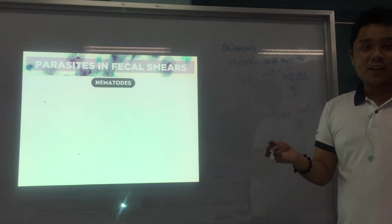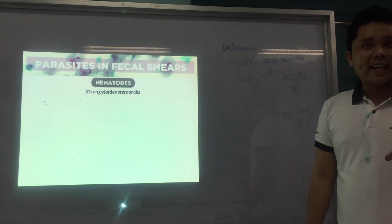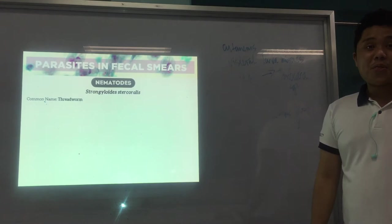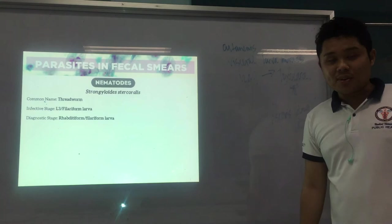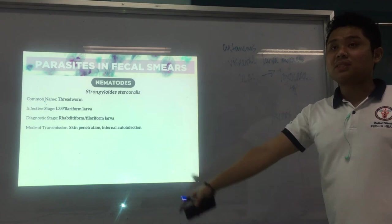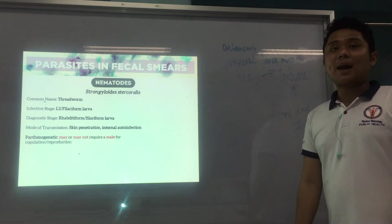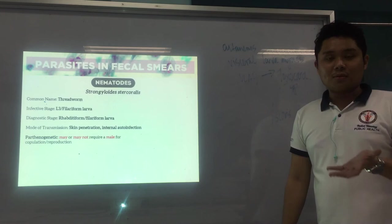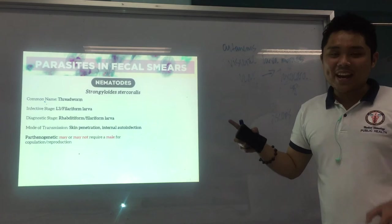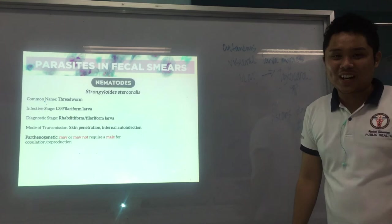The next nematode is Strongyloides stercoralis, closely related to hookworm. The common name is threadworm because it looks like a thread — very thin. The infective stage is the filariform larva, the same as hookworm. It is parthenogenetic — meaning the female may or may not require a male for reproduction; the female itself can produce larvae or eggs without a male. We call Strongy a 'strong independent woman.'